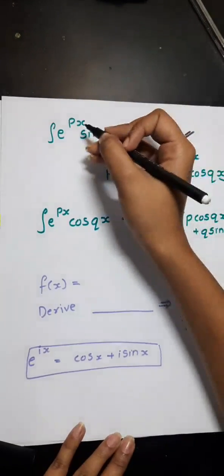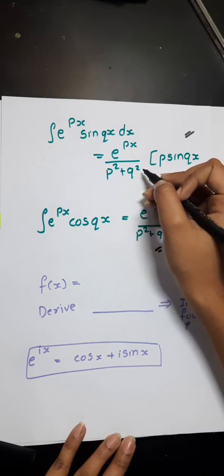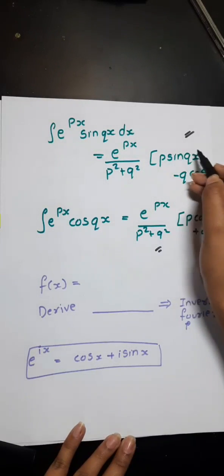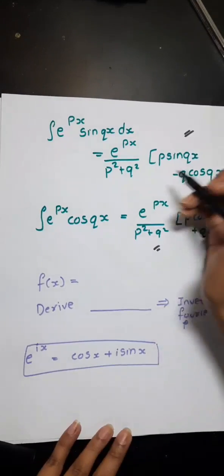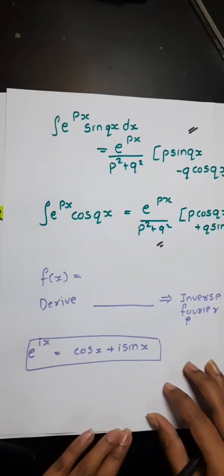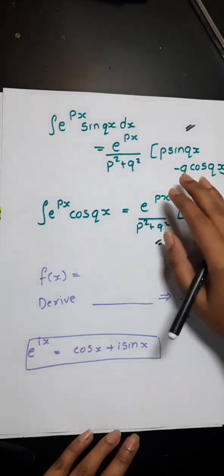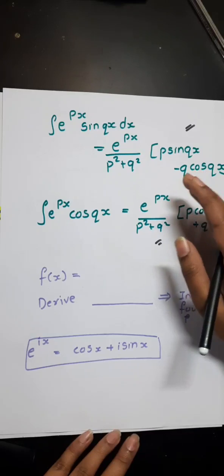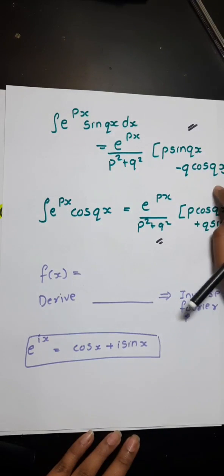So, e raised to power px into sine qx equals to e raised to power px divided by p square plus q square and p sine qx minus q cosine qx. Just remember these two formulas, it would be very useful for you while solving the questions. You can do this with an eyelet tool, but it is more easier by doing with this thing.